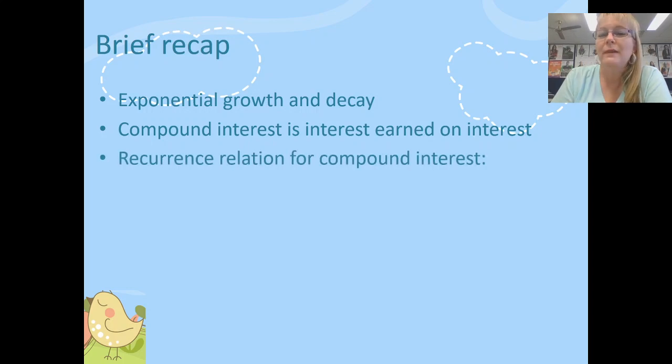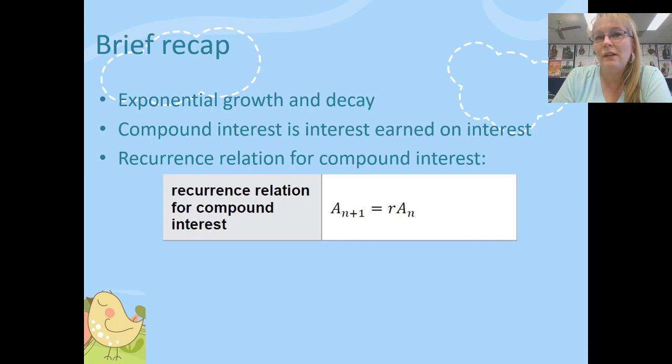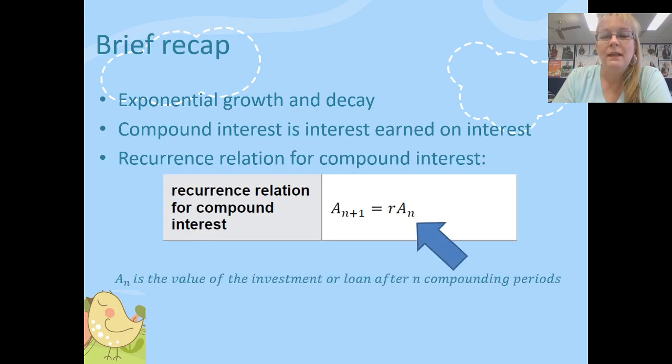The recurrence relation for compound interest is written in the formula sheet for the QCAA as A_{n+1} equals r times A_n. I'm going to take you through what this particular geometric sequence formula means. So A subscript n is the value of an investment or a loan after n compounding periods. So for example if n was equal to 3 that would be the value of that investment or loan after 3 years.